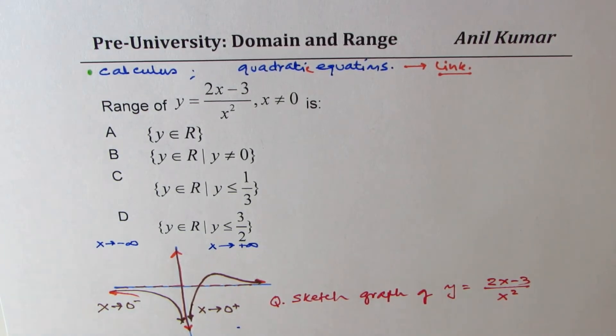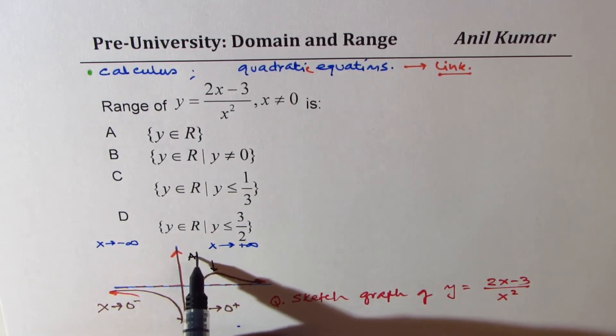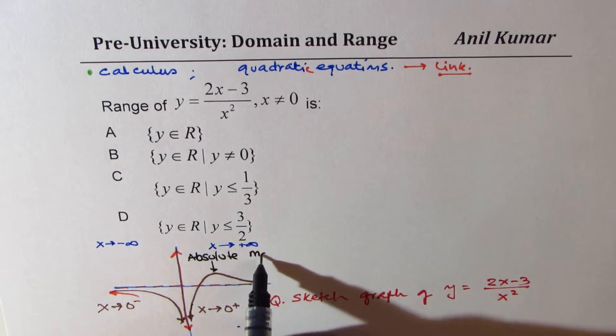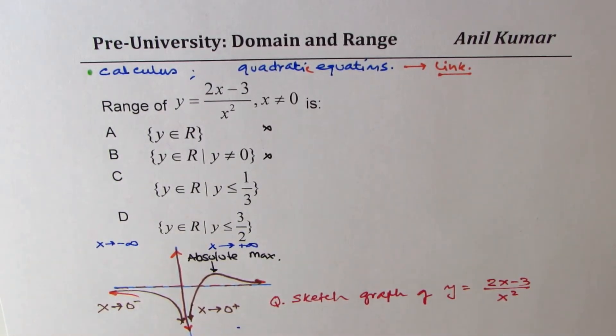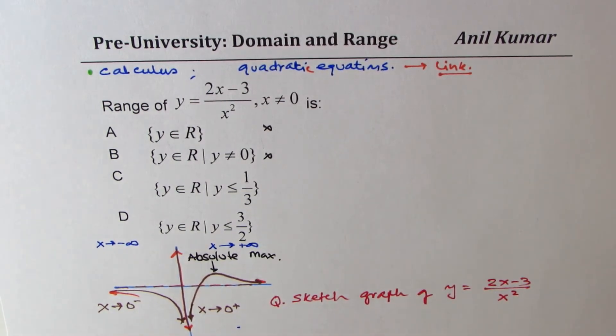Anyway, what I am trying to say here is that we have absolute maximum value. That clearly indicates that the first two answers are wrong. One of these is the right answer. Now, how do you find the correct answer?